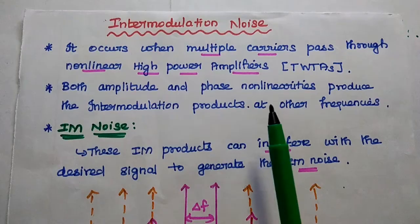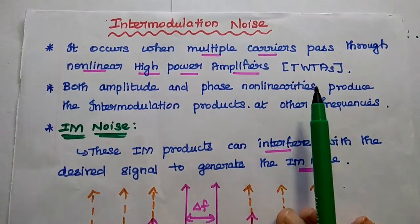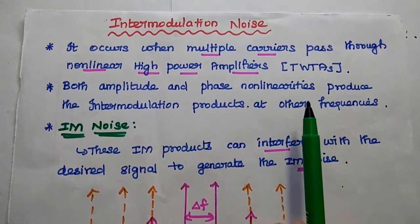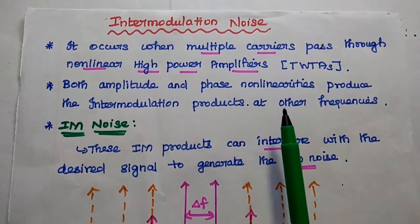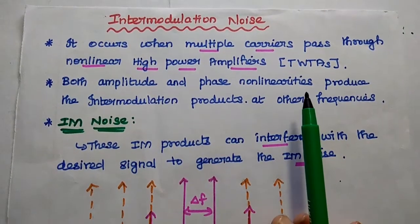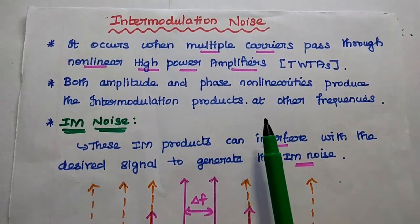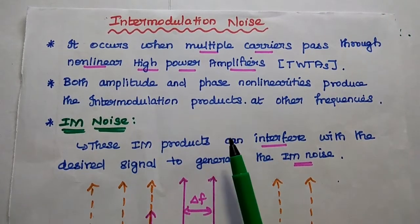In satellite communication, we are using the high power amplifiers like traveling wave tube amplifiers. These amplifiers are non-linear. Whenever multiple carriers are passing through these non-linear amplifiers, the amplitude and phase non-linearities produce the intermodulation products.